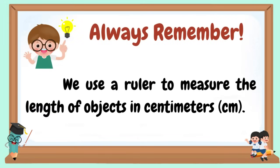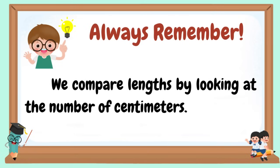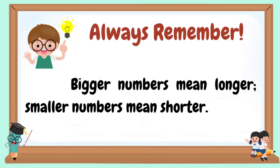Always remember: we use a ruler to measure the length of objects in centimeters. We compare lengths by looking at the number of centimeters. Bigger numbers mean longer; smaller numbers mean shorter.